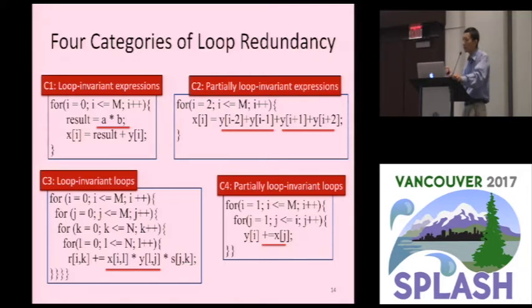Category two shows the case where we use loop invariant expression, but they are not completely invariant to the loop. They are invariant to partial iterations of the loop space. Category three is for loop invariant loops. In this case, you see that it is the loop, the i, l, j loop that is used to compute this x i l times y l j. And then category four is partially invariant loops.